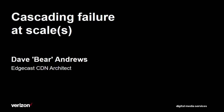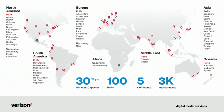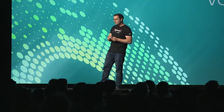What I wanted to have a chat about this morning was cascading failure at scale. I'm an Edgecast CDN Architect at Verizon Digital Media Services. When I say scale, at the upper end, this is the Edgecast CDN as it exists today — at least as it existed last week when I made this slide. We're growing rather quickly; two years ago our total network capacity was between two to three terabits per second.